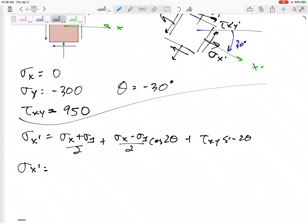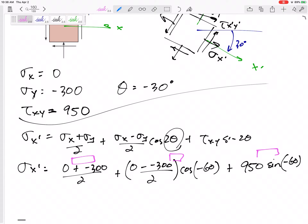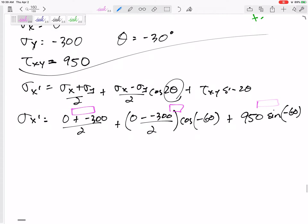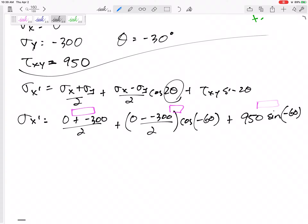So my new stress would be zero plus negative 300. Careful with my positives and negatives. Plus zero minus negative 300 over 2 cosine of what? Negative 60, right? 2 times negative 30 plus tau xy positive 950 sine of negative 60. Okay. Now, if I were you, I would get this value right here. I would get this value for that term, write it down, get that value for that term because some of these we're going to reuse, especially in the sigma y. All right, that's my new sigma x.